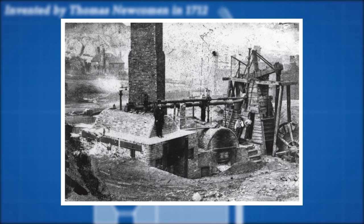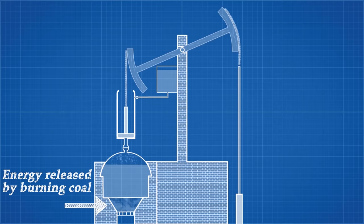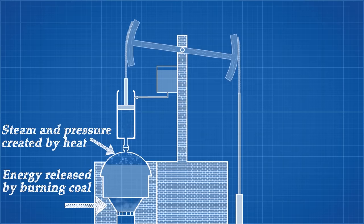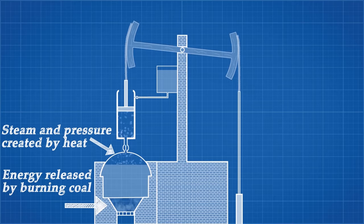To investigate why this engine was so inefficient, let's first talk about how it works. The engine takes energy stored in coal and converts it to heat. That heat is used to form steam in the cylinder, causing the pressure to increase and forcing the piston to rise against atmospheric pressure. No mechanical work occurs on this stroke because this chain can only transmit force in tension.